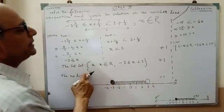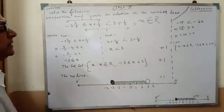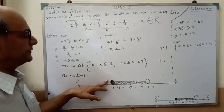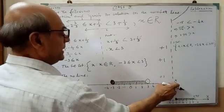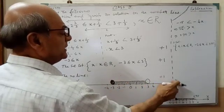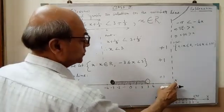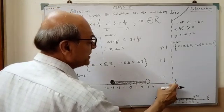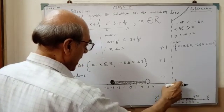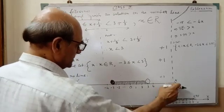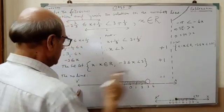After writing the solution set correctly, you get another part mark of plus 1. Then you have to represent the solution set on the graph. For the graph, first you have to draw a straight line. After drawing the straight line, you have to put the arrow on either side — if you do not put the arrow, it will be a segment of a line, not a straight line. After putting the arrow signs, you have to give the name of the line: x, x dash.